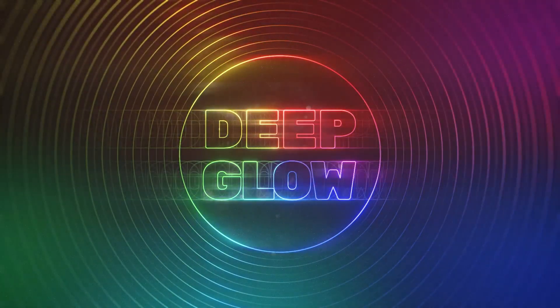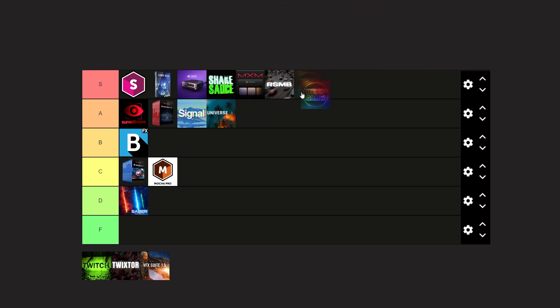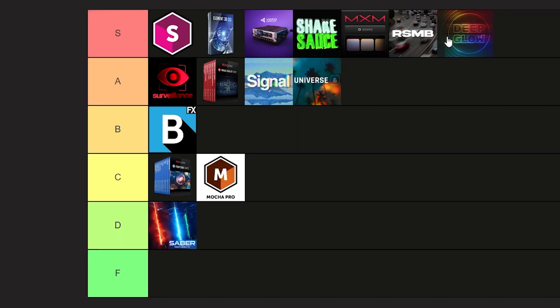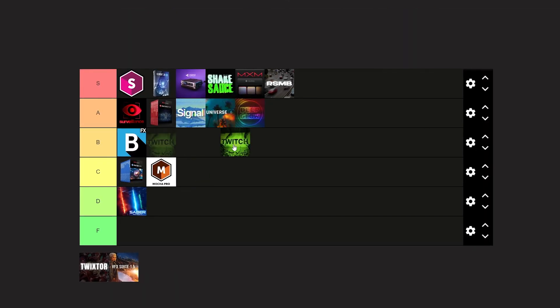Moving on to Deep Glow - this can be a controversial opinion because it's one of the favorite effects of people in After Effects. Almost everybody has it and it really gives that vibrant glow that After Effects really fails at doing. It's really like an S tier plugin, but just because I like Optical Glow more than Deep Glow, I'm gonna put it at A. Optical Glow is a bit better and smoother than Deep Glow in my opinion, so Deep Glow deserves an A right now.